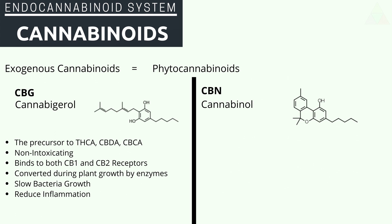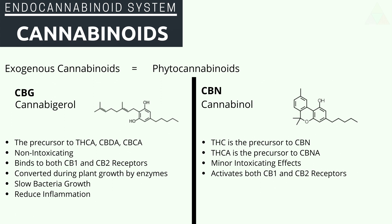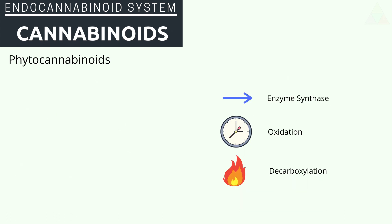Finally, CBN, or cannabinol. THC is the precursor to CBN, and THCA is the precursor to CBNA. It is minorly intoxicating and activates on both the CB1 and CB2 receptors. CBN is said to have sedative qualities, however this is usually in combination with other cannabinoids. It reduces inflammation and promotes appetite stimulation.